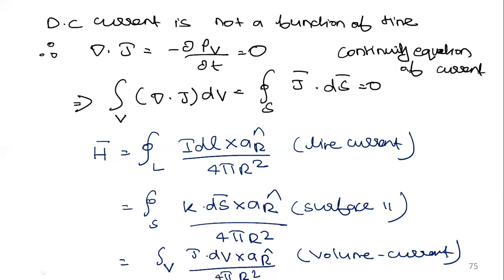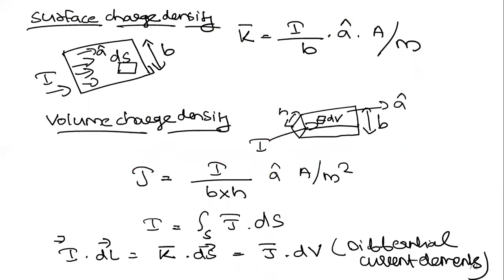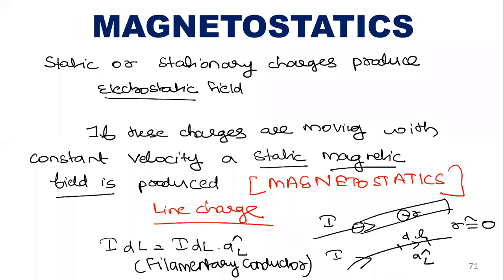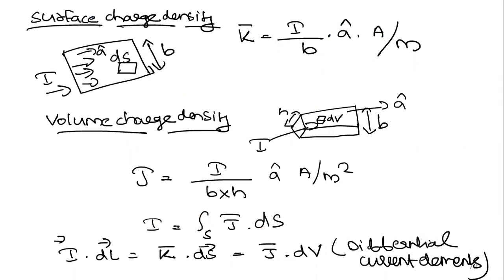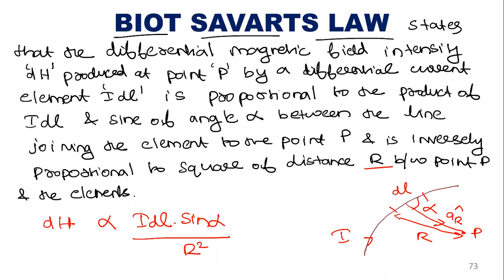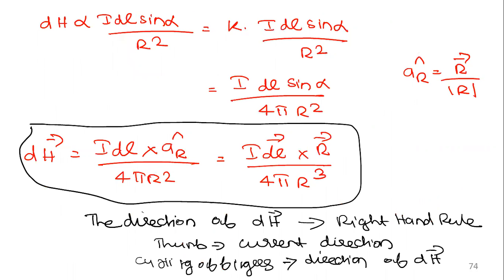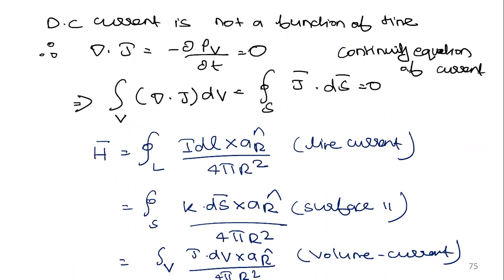In today's class, we started module 3, magnetostatics. We saw the difference between magnetostatics and electrostatics, the different types of current distributions — line, surface, and volume charge density — and the Biot-Savart law in detail, including how to find the direction of the magnetic field using the right hand thumb rule. We also covered the continuity equation for DC current and the magnetic field intensity H for line, surface, and volume currents.